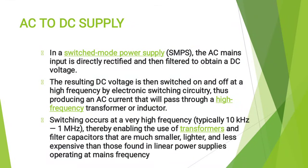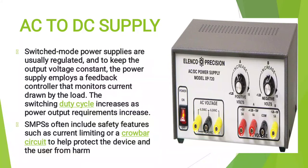In a switched mode power supply, the AC mains input is directly rectified and then filtered to obtain a DC voltage. The resulting DC voltage is then switched on and off at a high frequency by electronic switching circuitry, producing an AC current that will pass through a high frequency transformer or inductor. Switched mode power supplies are usually regulated, and to keep the output voltage constant, the power supply employs a feedback controller that monitors current drawn by the load. SMPS often includes safety features such as current limiting or a crowbar circuit to help protect the device and user from harm.